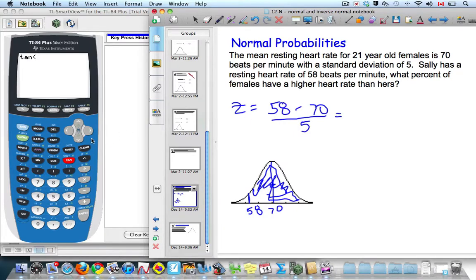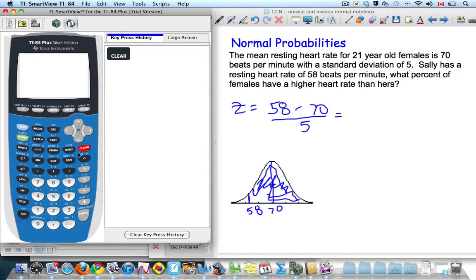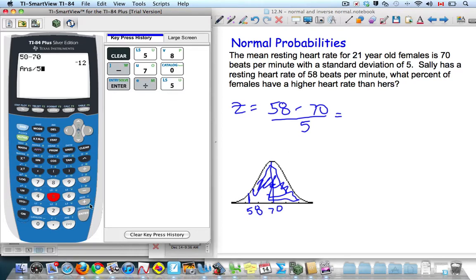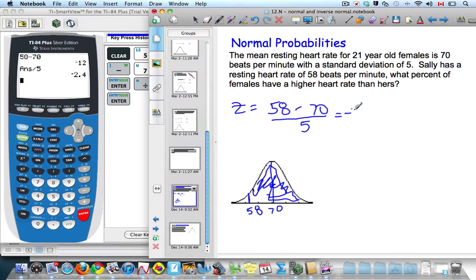So if we go to our calculator, we know that I can say 58 minus 70, divide that by 5. So I know my z-score is negative 2.4.